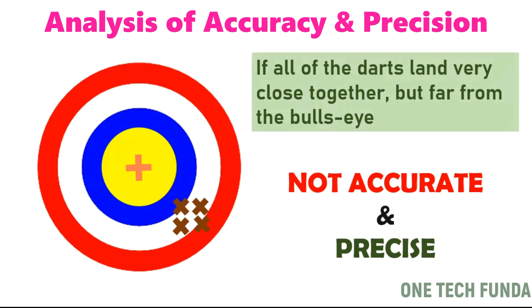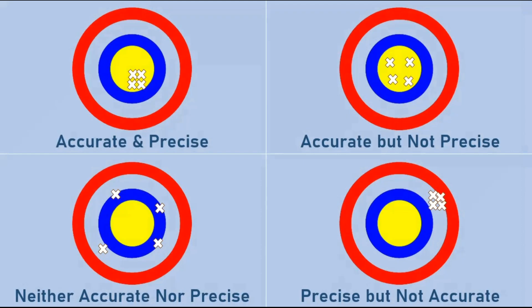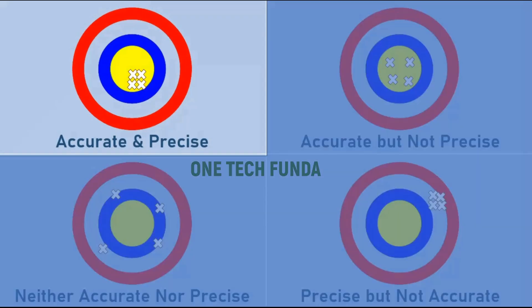If all of the darts land very close together but far from the bullseye, that means it is precise but not accurate.